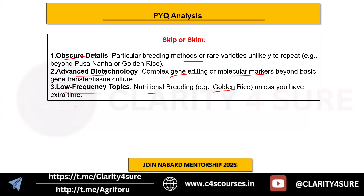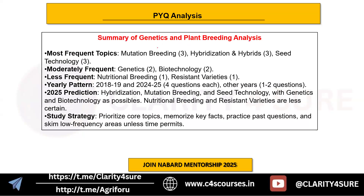Let's summarize today's session. The most frequent topics are mutation breeding, hybridization and hybrids, and seed technology — each with three questions. Moderately frequent topics are basics of genetics and biotechnology basics. Less frequent topics are nutritional breeding and resistant varieties. The yearly pattern shows that in 2018 and 2024 four questions were asked each year, with a dip in other years having only one to two questions.